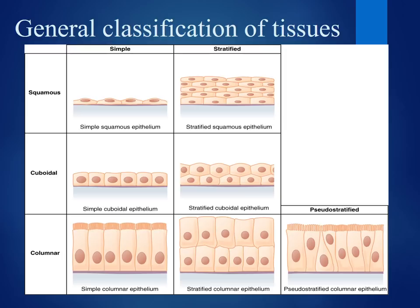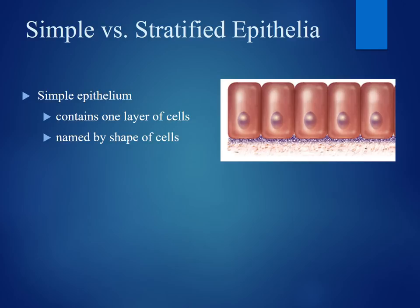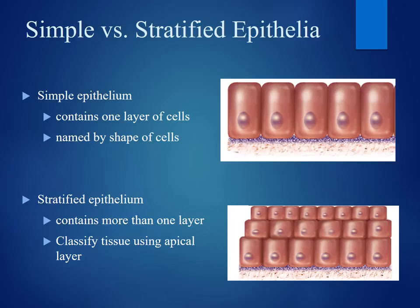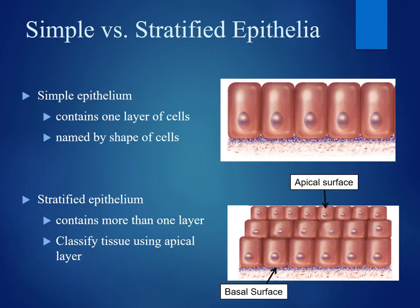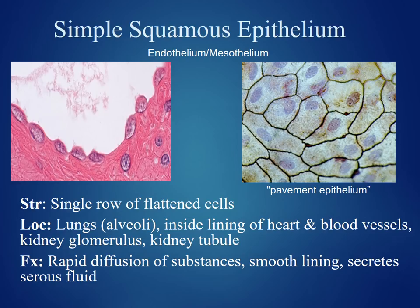Comparing simple versus stratified epithelium: simple contains one layer of cells and we name that tissue based on the cells in that one layer. For stratified epithelium, which contains more than one layer, the question becomes which layer do we use to describe the cell in the name. The rule for naming tissues is that we always use the apical surface to name these tissues. When we get to the stratified tissue types, remember that we're using the apical surface — the top or superficial layer — to name these tissues.